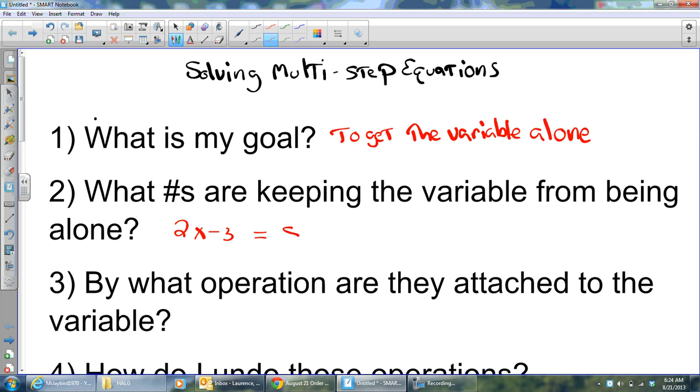That'll vary on the problem. But remember, we're looking on the same side of the equal sign. So in this case, the 2 and the 3 are keeping it from being alone, not the 8, because it's on the other side of the equal sign.